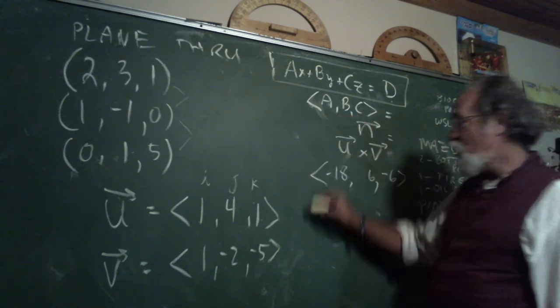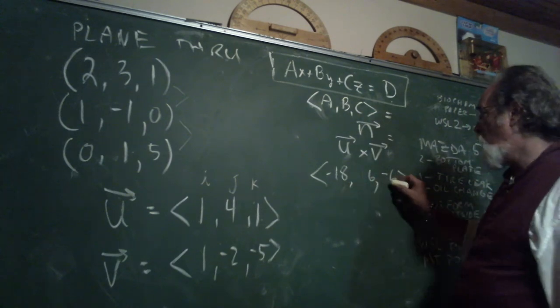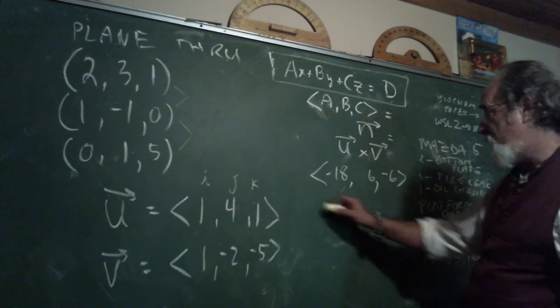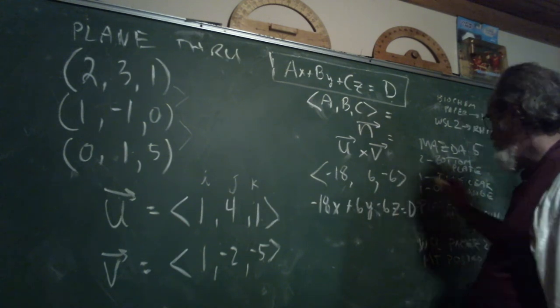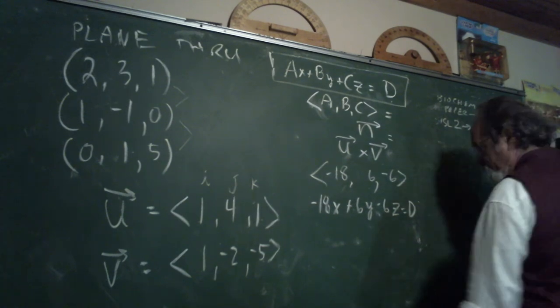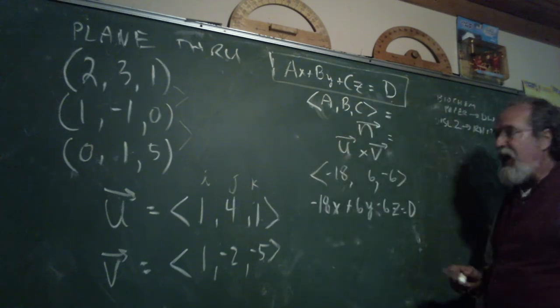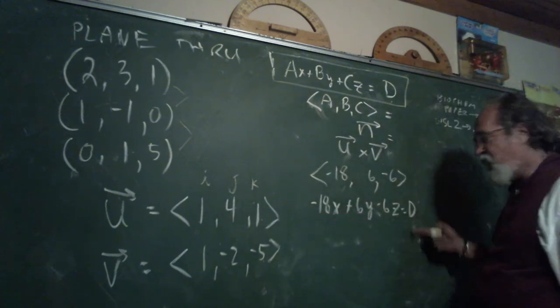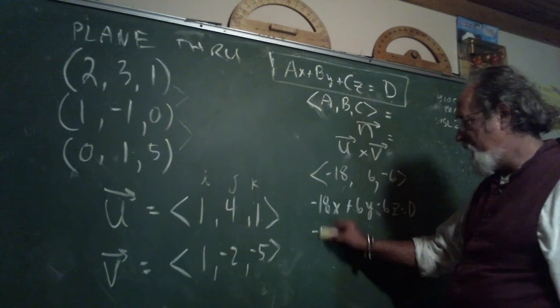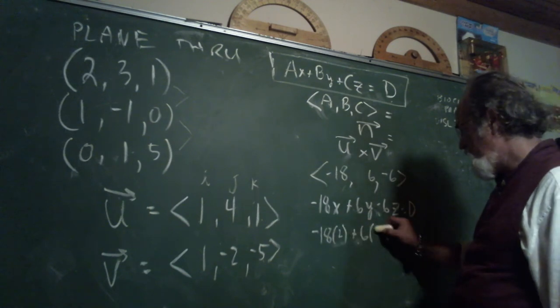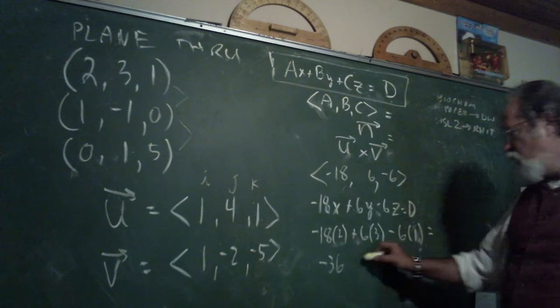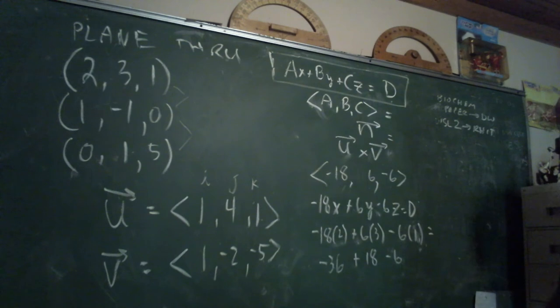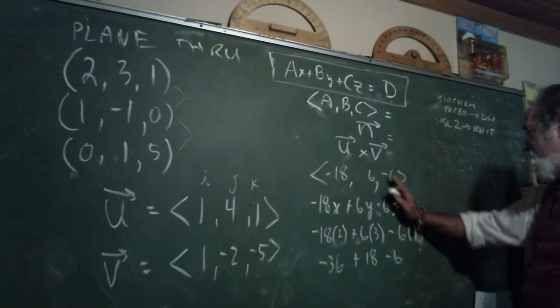So I can use this as my equation. Negative 18x plus 6y minus 6z equals d. So that's my structure. That's my equation in the plane. Any one of these three points has to satisfy this equation. So if I use the first point, 2, 3, 1, I get negative 18 times 2 plus 6 times 3 minus 6 times 1 equals d. So that's negative 36 plus 18 minus 6. So that's going to be the same as negative 36 plus 18. That's negative 18 minus 6 more. That's negative 24. My d is negative 24.